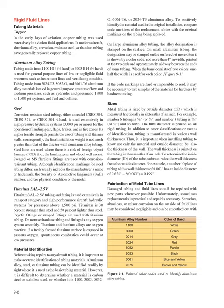Swaged or MS flareless fittings are used with corrosion-resistant tubing. Although identification markings for steel tubing differ, each usually includes the manufacturer's name or trademark, the Society of Automotive Engineers (SAE) number, and the physical condition of the metal. Titanium 3AL-2.5V tubing and fittings are used extensively in transport category and high-performance aircraft hydraulic systems for pressures above 1,500 psi. Titanium is 30% stronger than steel and 50% lighter than steel. Cryofit fittings or swaged fittings are used with titanium tubing.